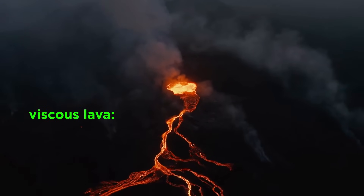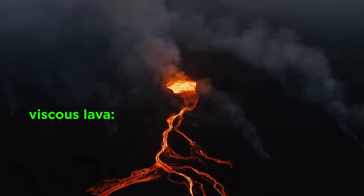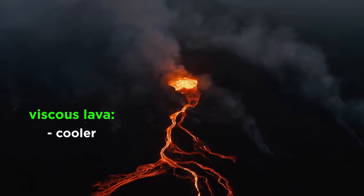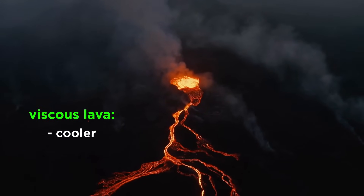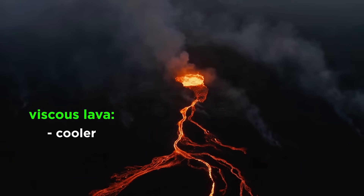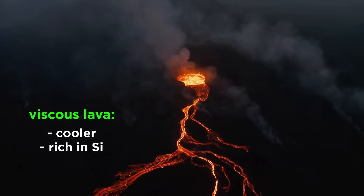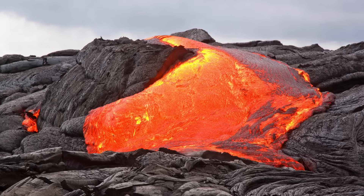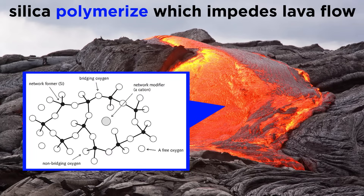Stratovolcano lava is viscous for two reasons. First, it is about 500 degrees lower in temperature compared with an effusive volcano like Hawaii. Second, it is rich in silica. When silica is a component of a melt, it polymerizes, or forms networks of bonds, which makes it increasingly resistant to flow with increasing silica content.